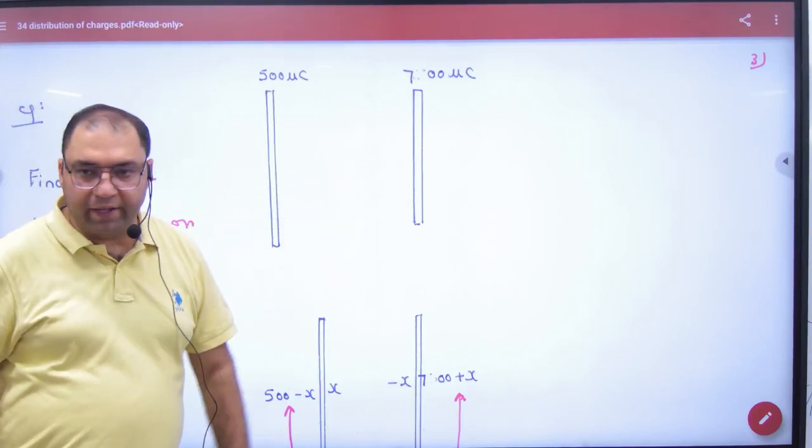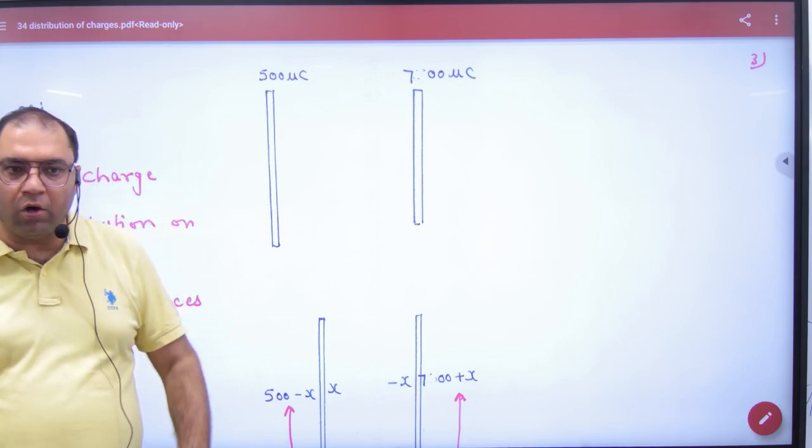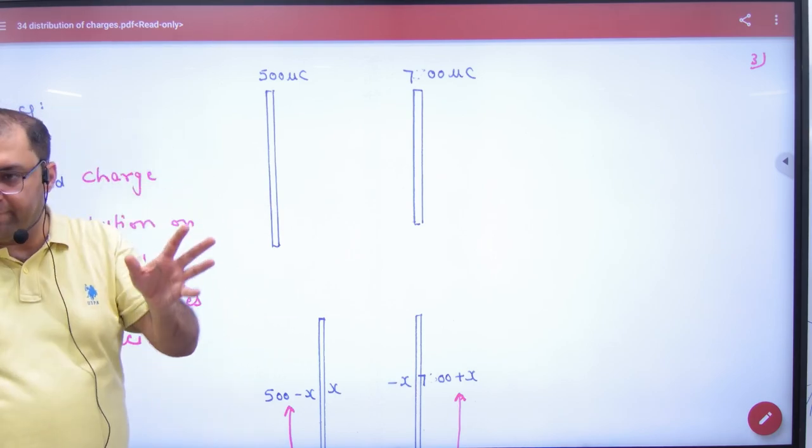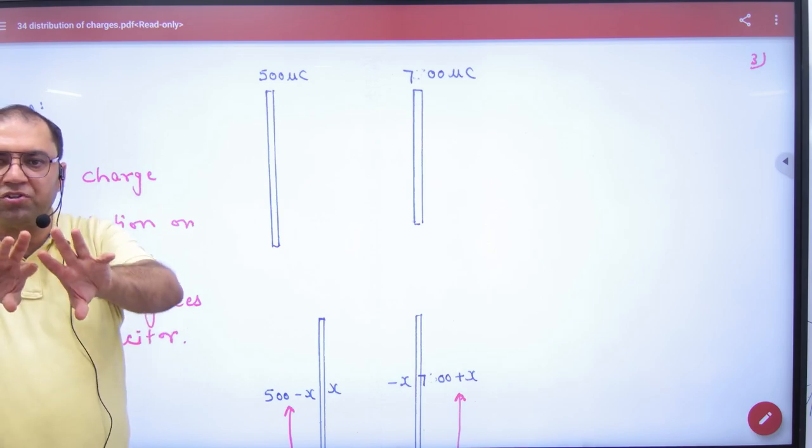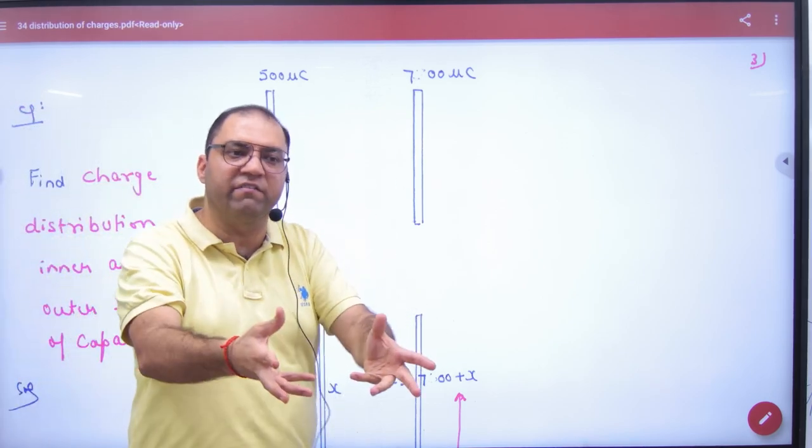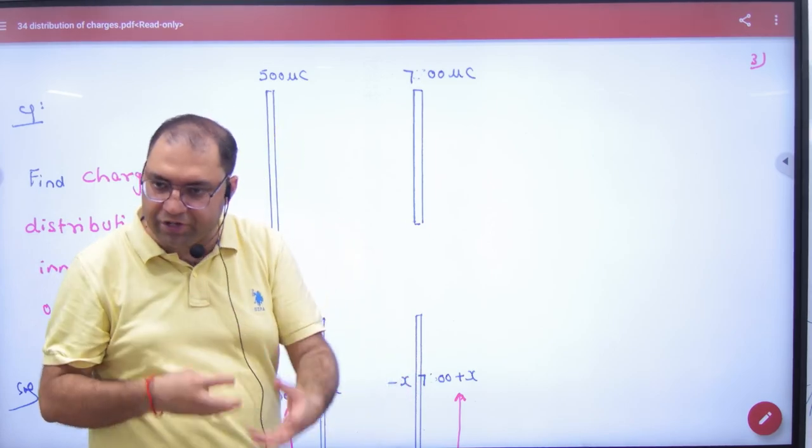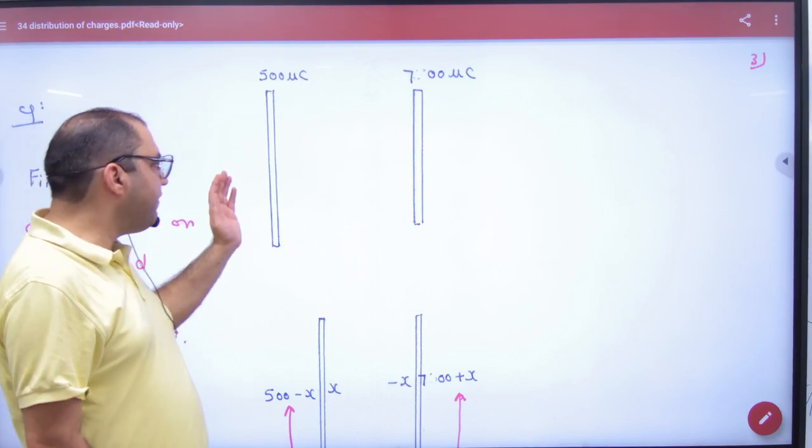If you have two plates, 500 and 700 microcoulombs of total charge left and right, if you bring them in front, the charge will be redistributed. The positive and negative will be on the inside because positive and negative inductions will be on the inside. There will be attraction and repositioning. So you have to tell what charges will be on left and right.